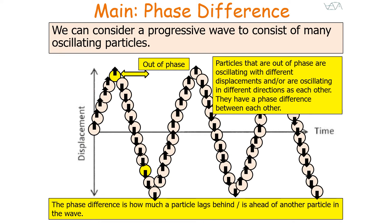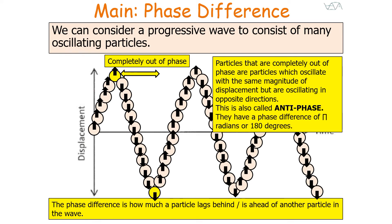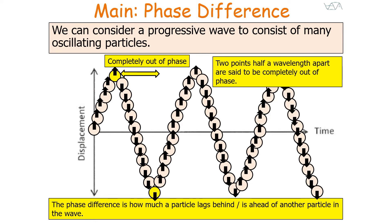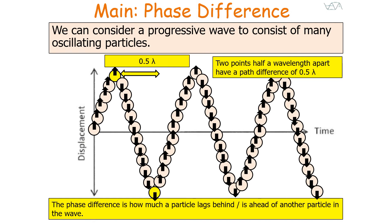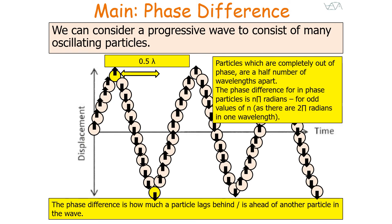There is a special case of out-of-phase particles called antiphase, or completely out of phase. These particles oscillate with the same magnitude of displacement but in opposite directions. When two particles or two points of a wave are completely out of phase, we say they have a phase difference of π radians, or 180 degrees. Two points half a wavelength apart are completely out of phase, giving a path difference of 0.5λ. The path difference for out-of-phase particles is (n/2)λ, and the phase difference is nπ radians for odd values of n.